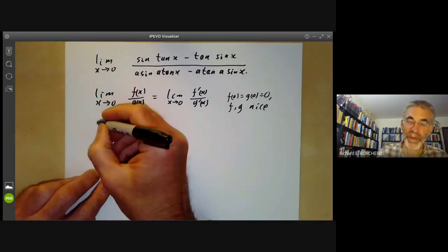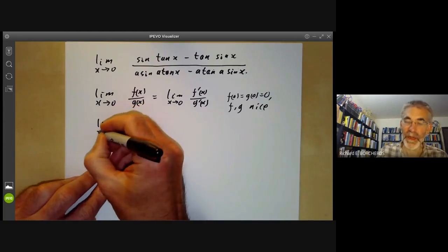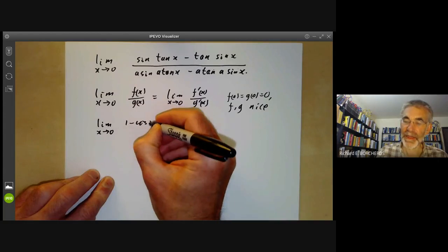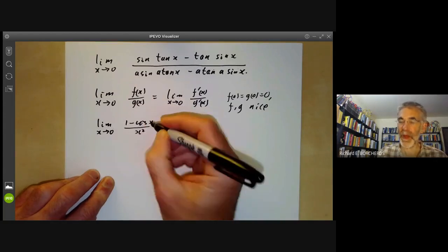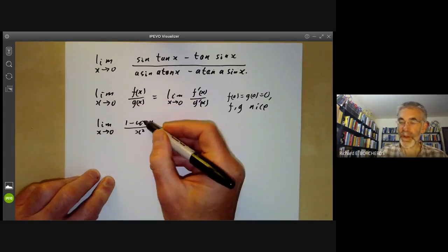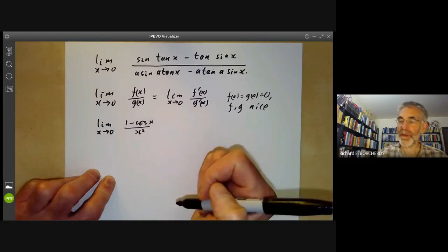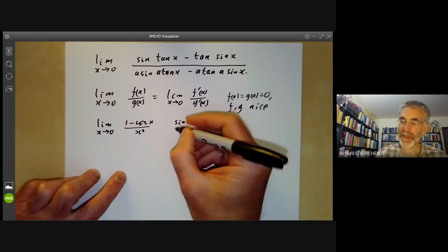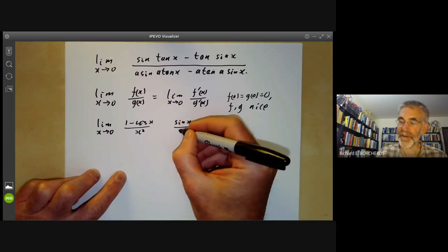For example, suppose we want to calculate the limit as x tends to zero of (1 minus cosine x) over x squared. The numerator and denominator both have limit zero, so we just differentiate them and find it's the same as the limit of sine x over 2x.